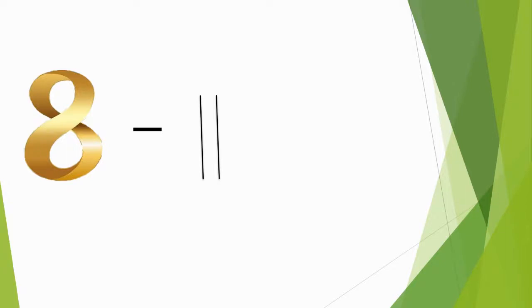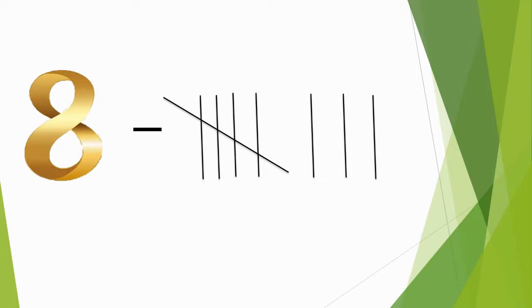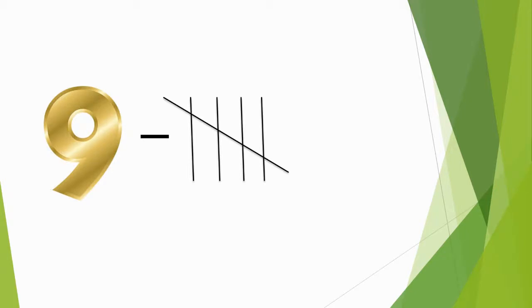Number 8 is represented by four standing lines, one slant line making a group of five, and three additional standing lines. Number 9 is represented by four standing lines and one slant line making a group of five, and four additional standing lines.